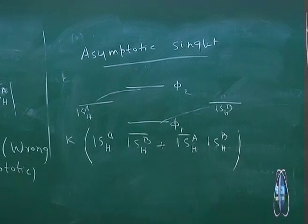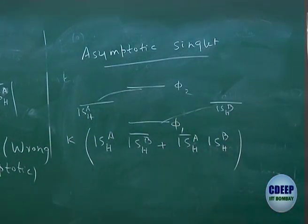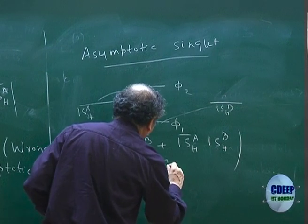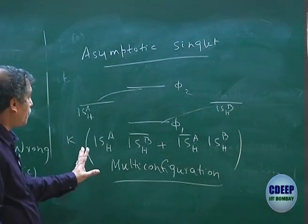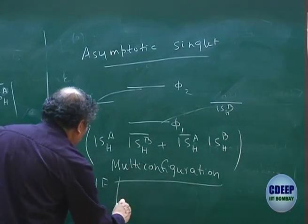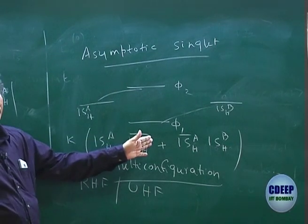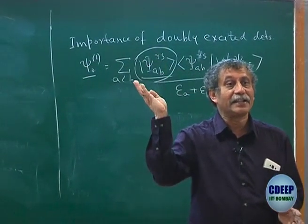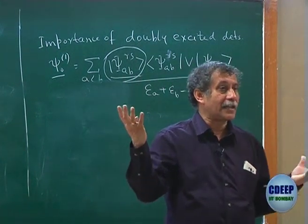This is the basis of all multi-reference problems — multi-reference CI, multi-reference perturbation theory, and so on. The problem is whenever a closed-shell molecule fragments into two open-shell parts, and this problem cannot be washed away by simply doing MP2 or first-order correction to the wave function. We need to understand why multi-reference is important at least in this context of dissociation: a molecule is closed-shell but dissociates into two open-shell fragments. If it dissociates into two closed-shell molecules, there is no problem.